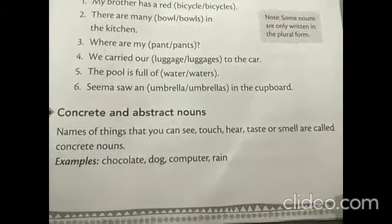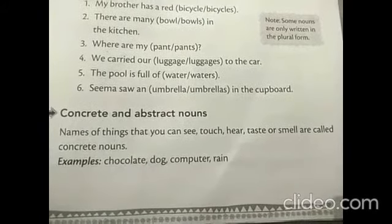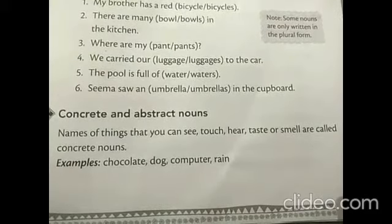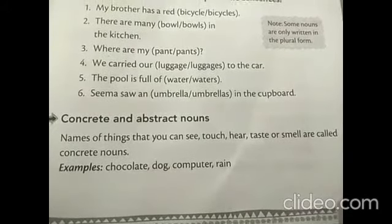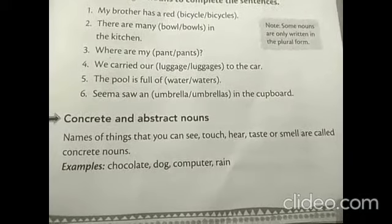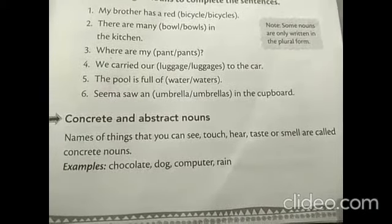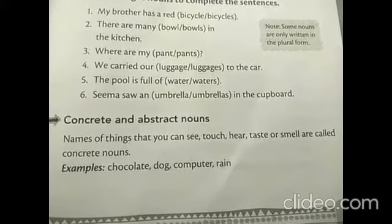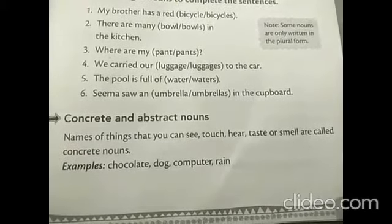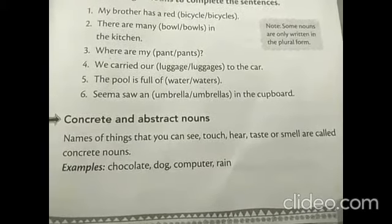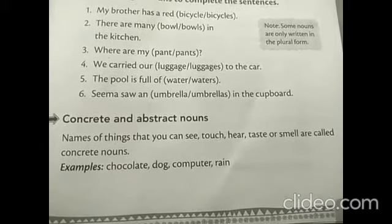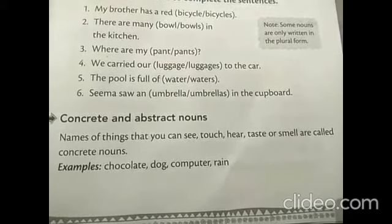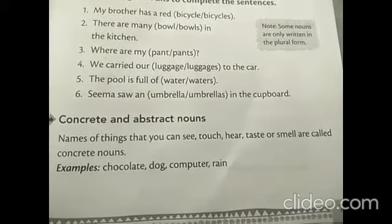So what is the definition of concrete nouns? Names of things that you can see, that you can visualize, that you can touch. Your taste or smell are called as concrete nouns. Here the five senses come into play — that is see, touch, taste, and smell.